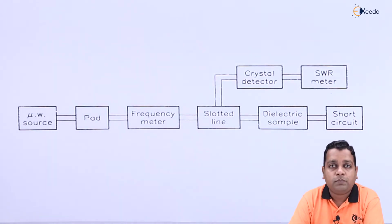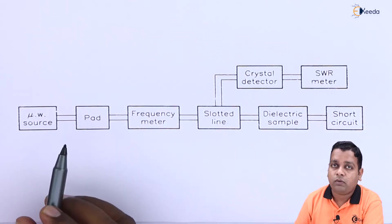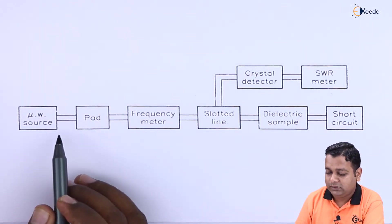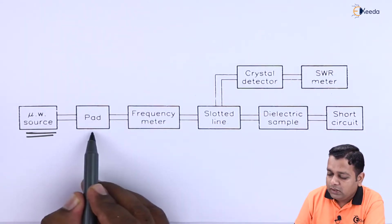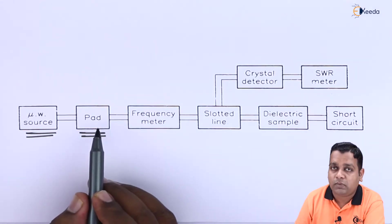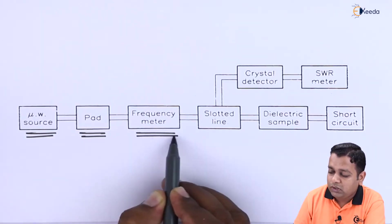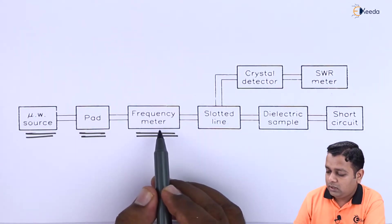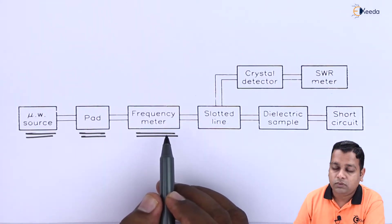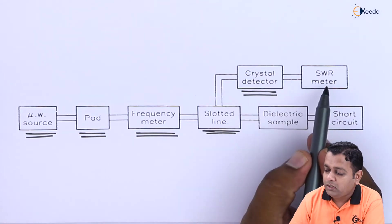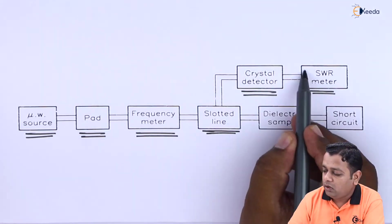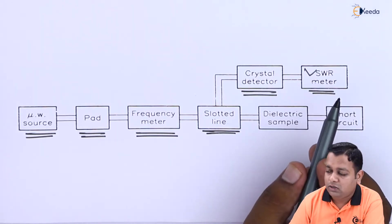For dielectric constant measurement we shall use the Roberts and Von Hippel's method, in which the microwave test bench arrangement consists of a microwave source generating a microwave signal transmitted through a microwave isolator, connected to a frequency meter, then to a slotted line mounted with a crystal detector, and finally connected to a VSWR meter.